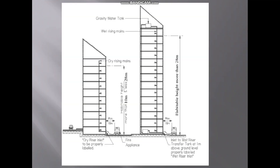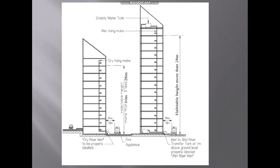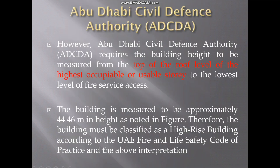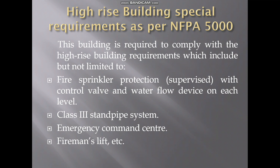Each building type has different requirements. For high-rise buildings, I have highlighted some key requirements. Mainly, you need fire sprinkler protection at each level with a supervised control valve and water flow device — that is the zone control valve — and we need a Class 3 standpipe system.